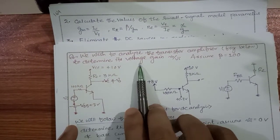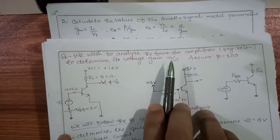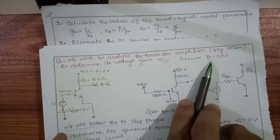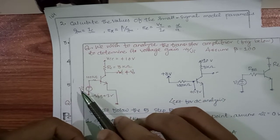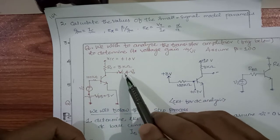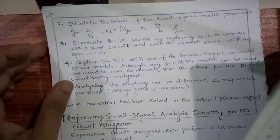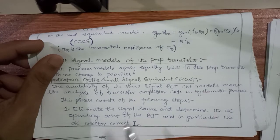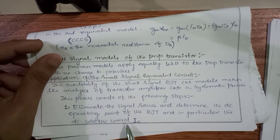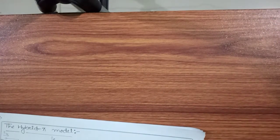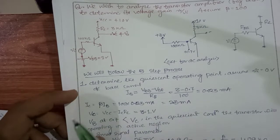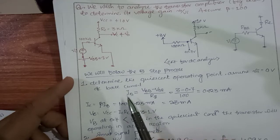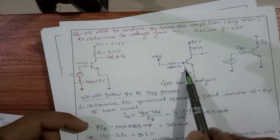The question asks us to analyze a transistor amplifier to determine the voltage gain V_out / V_in — the small signal gain. Beta is given as 100. The circuit has both AC and DC components. Step 1: determine the Q-point. We assume V_input = 0 (eliminate AC source). The circuit shows V_BB = 3V with base resistor R_BB = 100 kΩ. The base current I_B = (3V − 0.7V) / 100 kΩ = 0.023 mA.